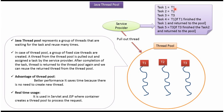Once Thread1 finishes Task1, Thread1 will be returned to the ThreadPool. And once Thread1 is available, the Service Provider will pull out Thread1 and assign Task4. And once Thread3 finishes Task3, Thread3 will be returned to the ThreadPool, and the Service Provider will pull out Thread3 and assign Task5.